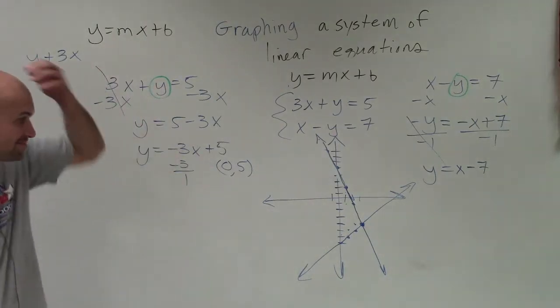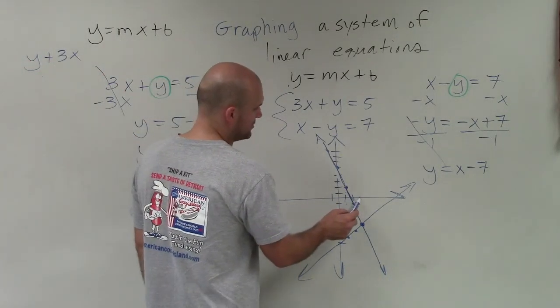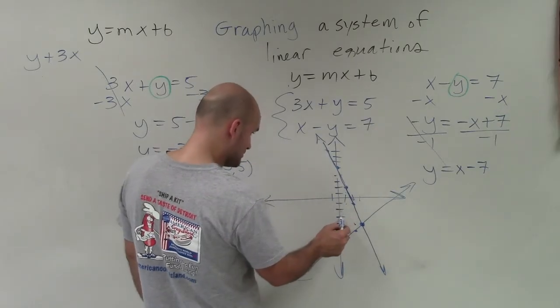So I'm assuming if I did my graph correctly, that I would have now this point is going to be at this coordinate point, which is over 1, 2, 3. Down 1, 2, 3, 4.